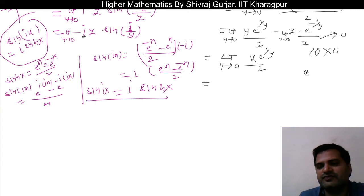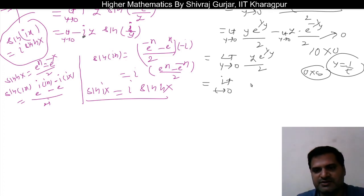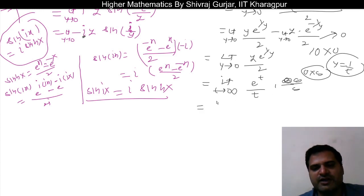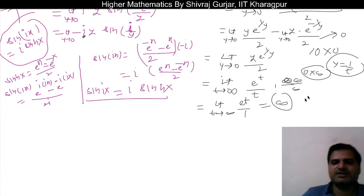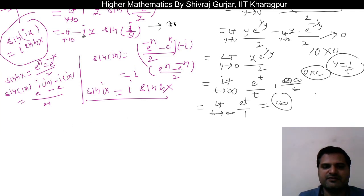To evaluate limit y tends to 0 of y·e^(1/y): substitute t = 1/y, so as y → 0, t → infinity. The expression becomes limit t tends to infinity of e^t / t, which is an infinity/infinity form. Applying L'Hôpital's rule, the limit becomes limit t tends to infinity of e^t / 1, which equals infinity. So the first term goes to infinity, and therefore the overall limit goes to infinity.